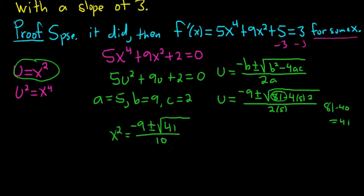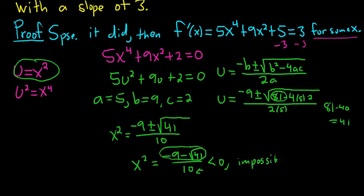So this should not make sense. Let's think about it. You have two cases here. So in the first case, let's say you have x squared equals negative 9 minus the square root of 41 over 10. The numerator is negative, so you have a negative over a positive, so this is negative. So this is less than 0. This is impossible. x squared cannot be less than 0. And if you take the square root of this, you'll get an i. You'll get an i, and x here has to be a real number. So that's a contradiction even if you were to keep going.